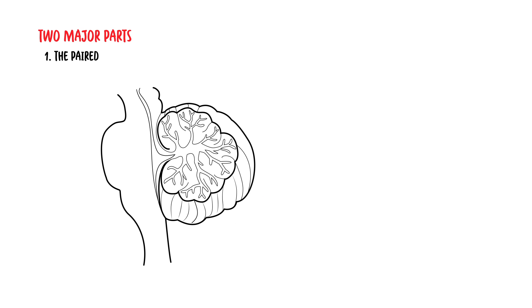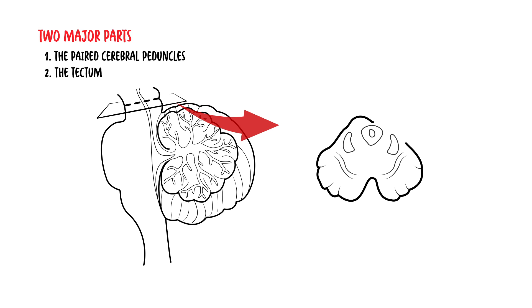The midbrain is made up of two major parts: the paired cerebral peduncles and the tectum. The paired cerebral peduncles are found at the anterior surface of the midbrain, whereas the tectum is found at the posterior, at the back of the midbrain.